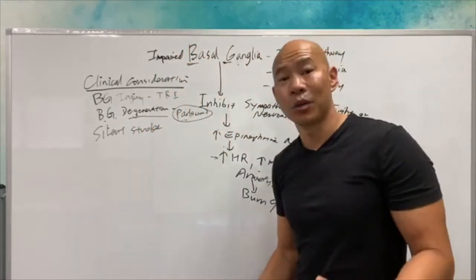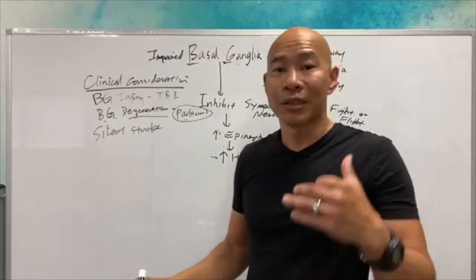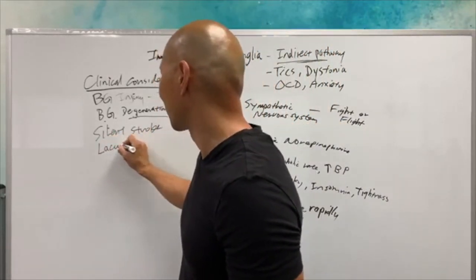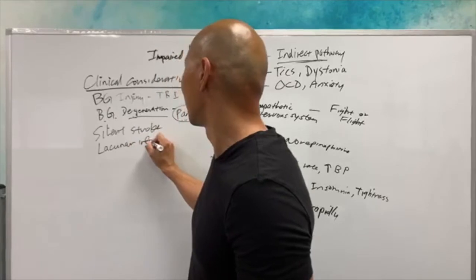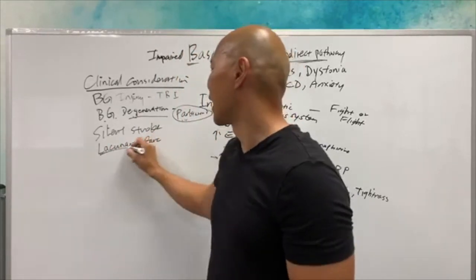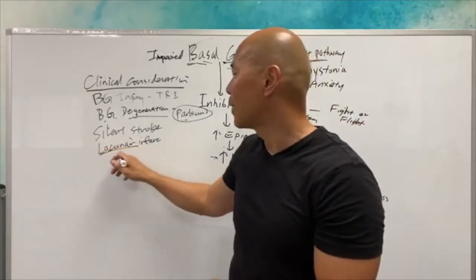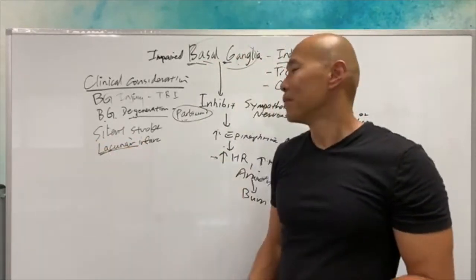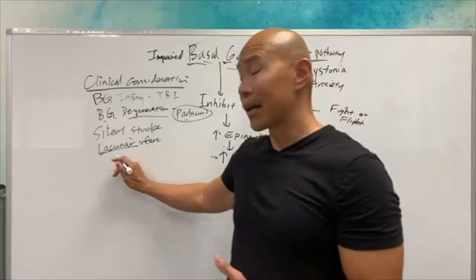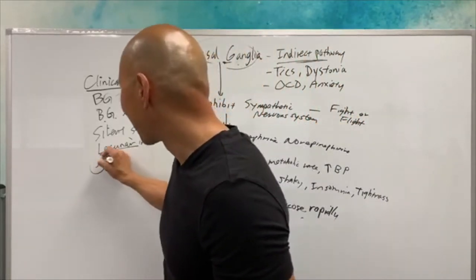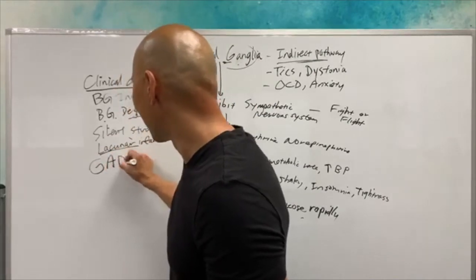And you can also have this basal ganglionic issue from a silent stroke. Maybe you had a silent stroke, you didn't know you had a stroke and you just start losing function. Sometimes we can have stroke, it's called lacunar infarct. This is an area near here where there's a collection of blood vessels and it's a very common area for strokes. So this may be something that needs to be diagnosed. Sometimes imaging may be required.